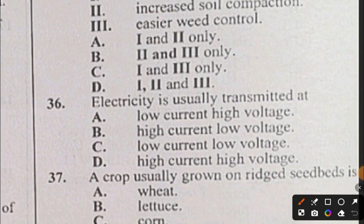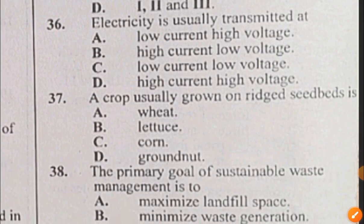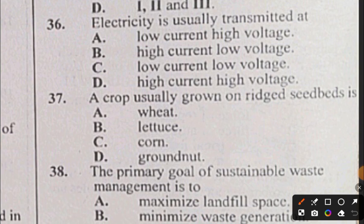Question 36: Electricity is usually transmitted at: A) low current high voltage, B) high current low voltage, C) low current low voltage, D) high current high voltage. The answer is A, low current high voltage. Question 37: The crop usually grown on raised seed beds is: A) wheat, B) lettuce, C) corn, D) granite. Question 37, the answer is D, granite.